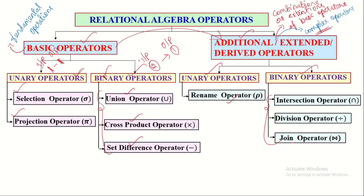Rename, intersection, division, and join operators are used for performing advanced operations, which is why they are classified under additional operators of relational algebra. We will discuss all these operators in detail with suitable examples in subsequent videos. If you find this video useful, kindly subscribe to this channel. Thanks for watching.